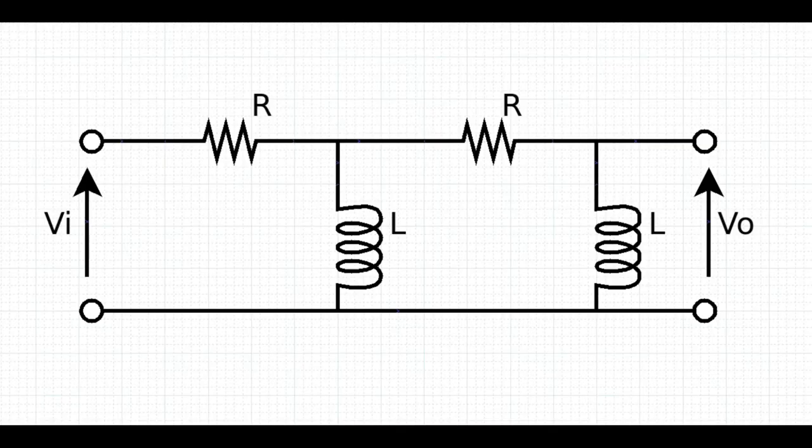This one, too, is a second-order filter, but it is made with resistance and inductance. We call it a second-order passive RL high-pass filter. Again, we have VI as the input signal and VO as the output. To simplify calculations, the two resistors have the same value, and so do the two inductors.